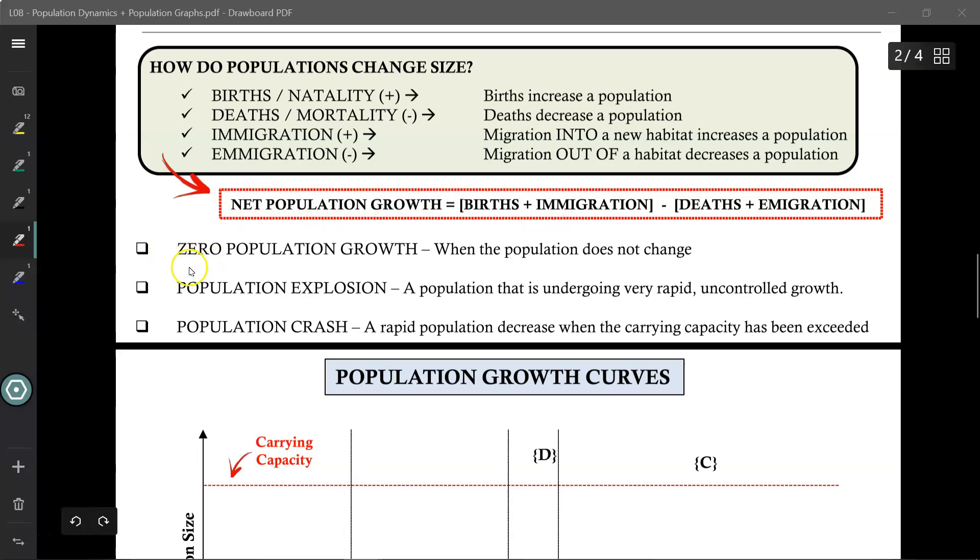Some key terms to keep in mind. A zero population growth occurs when the population doesn't change. So, typically when this number and this number are identical, then you have no change. If one person is born but one person dies, your net population doesn't change. A population explosion, on the other hand, occurs when the population is undergoing a very rapid and uncontrolled growth. There are many reasons for this, but we'll explore that in a few moments.